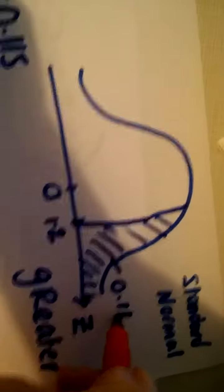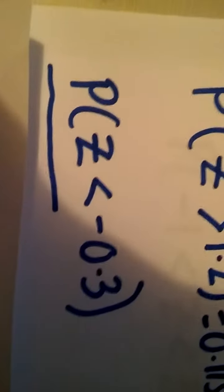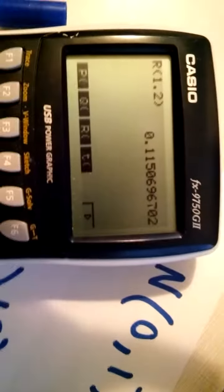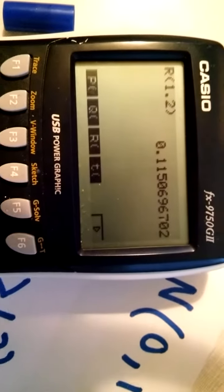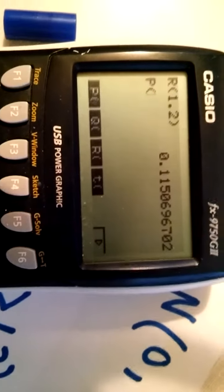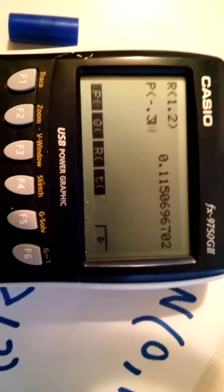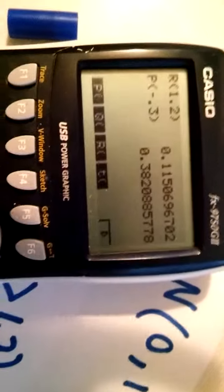Here we have a question to find the probability Z is less than minus 0.3 so on the calculator we want less than so we want the P button, P minus 0.3 and the bracket and it tells me the probability 0.382.